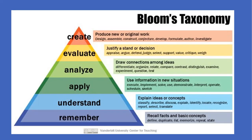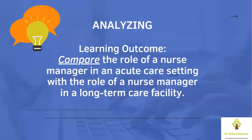The next level is Analyze, which means to draw connections or conclusions among ideas — to differentiate, organize, relate, compare and contrast, distinguish, examine, experiment, question, and test. Compare, classify, and differentiate are also listed in your book. A learning outcome example is: compare the role of a nurse manager in an acute care setting with the role of a nurse manager in a long-term care facility. This is a good example of how to write a learning outcome at the analyzing level, and you can easily outline an assignment for a student related to this outcome.